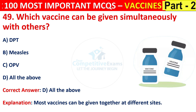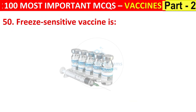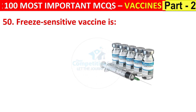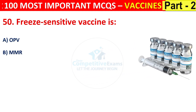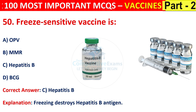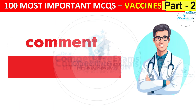Question number 50, the last of today's session. Freeze-sensitive vaccine is OPV, MMR, hepatitis B, or BCG. The correct answer is C, that is hepatitis B. Freezing destroys the hepatitis B antigen.